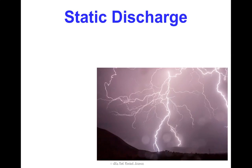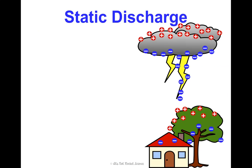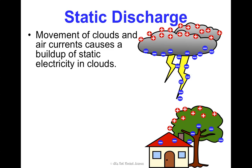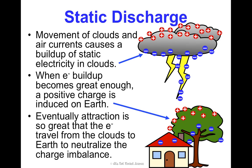Something pretty interesting is called static discharge — and this is lightning. It's a sudden flow of electric charge between two charged objects caused by a buildup of static electricity. Here's how it occurs: movement of clouds and air currents during a storm cause a buildup of static electricity in the clouds, creating a negative buildup of charge. When that buildup becomes great enough, it will actually induce a positive charge on Earth — the negative electrons on Earth are repelled backwards, leaving positive charge on the outer surface that creates attraction. When the attraction becomes great enough, electrons travel from the clouds to Earth to neutralize, and that's the lightning strike we see.